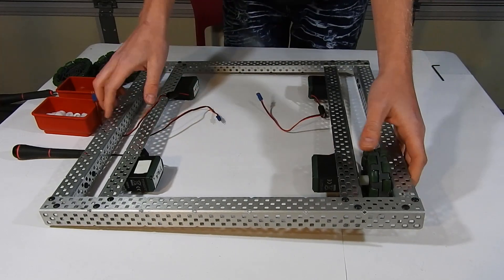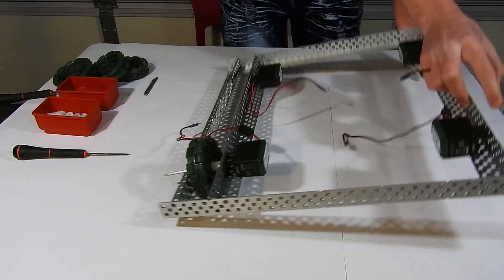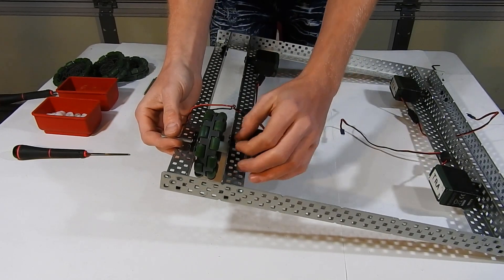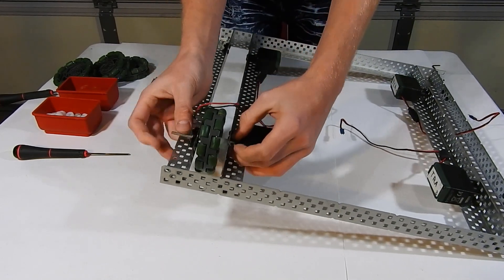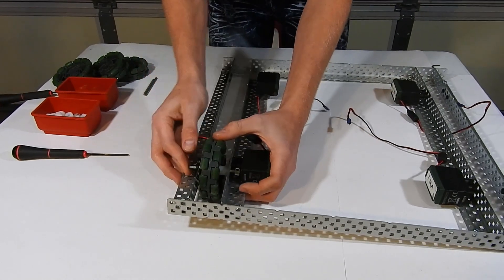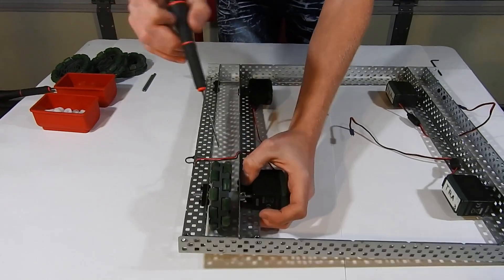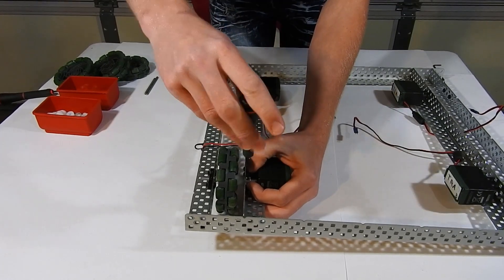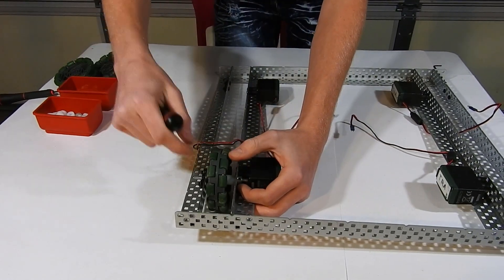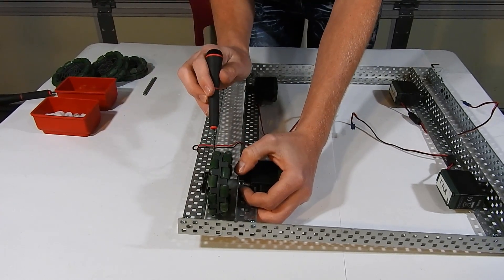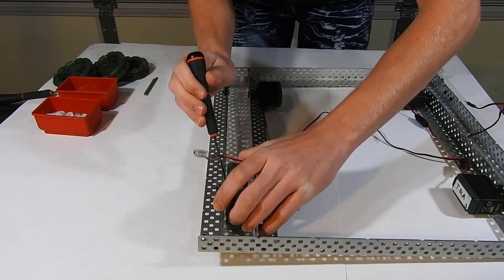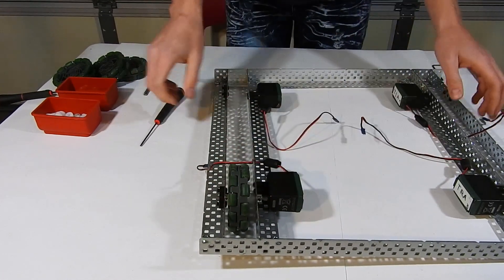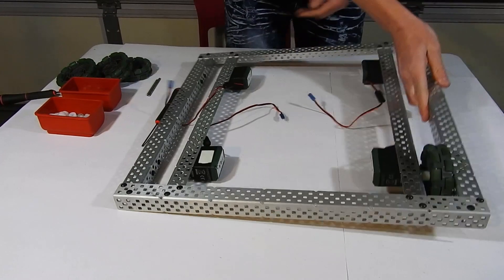And then you're going to flip it over and take another collar and put that collar in between the metal and the motor, and slide the axle through it. Then push the axle into the motor as far as it will go. And you're going to slide that second collar up against the metal away from the motor and tighten it. And you're going to tighten the other collar. Now do the same thing for all four corners.